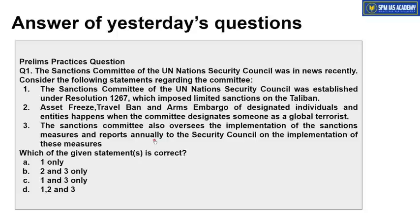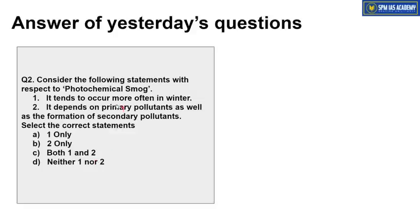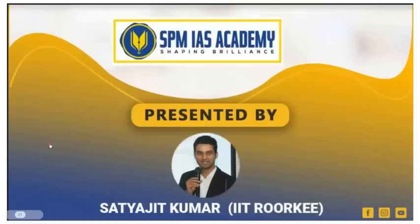Reviewing yesterday's practice question answers: The Sanctions Committee of the United Nations Security Council, established under Resolution 1267, imposes sanctions on the Taliban — asset freeze ban, travel ban — and oversees implementation of sanctions measures, reporting annually to the Security Council. All statements were correct. For photochemical smog: the statement that it tends to occur more often in winter is wrong — photochemical smog occurs more in summer. It depends on primary pollutants such as NOx (nitrogen oxide) and secondary pollutants like PAN (peroxyacetyl nitrate). The second statement is correct, making option B the correct answer.